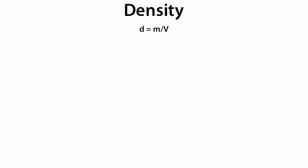Moving on to density. An object's density is its mass divided by its volume. Or density d is equal to m over V.